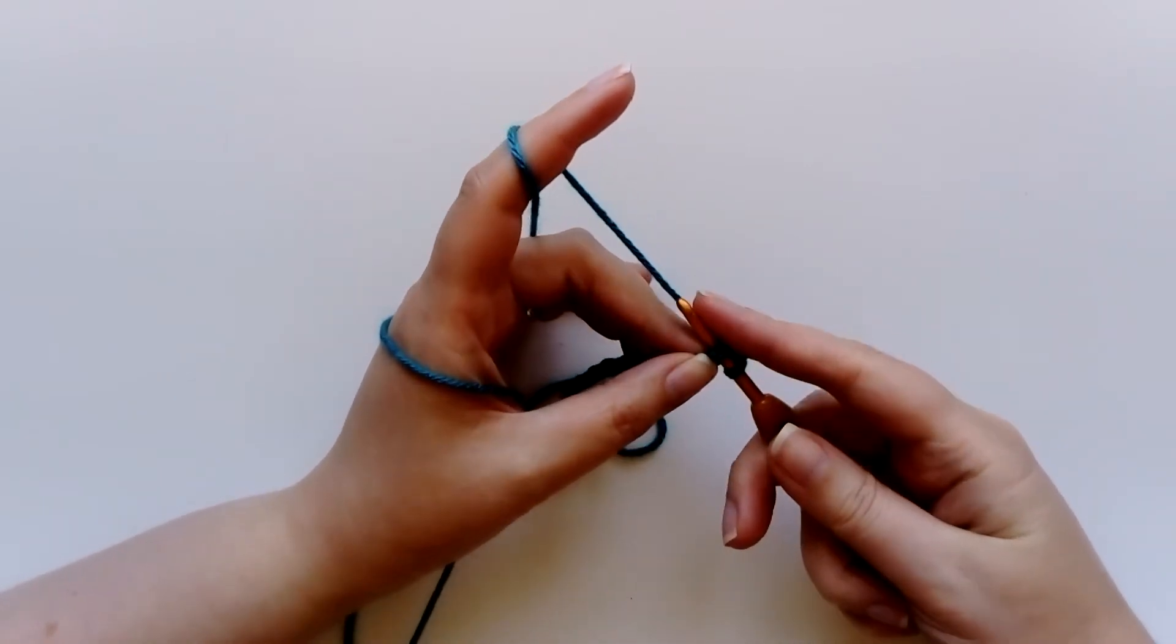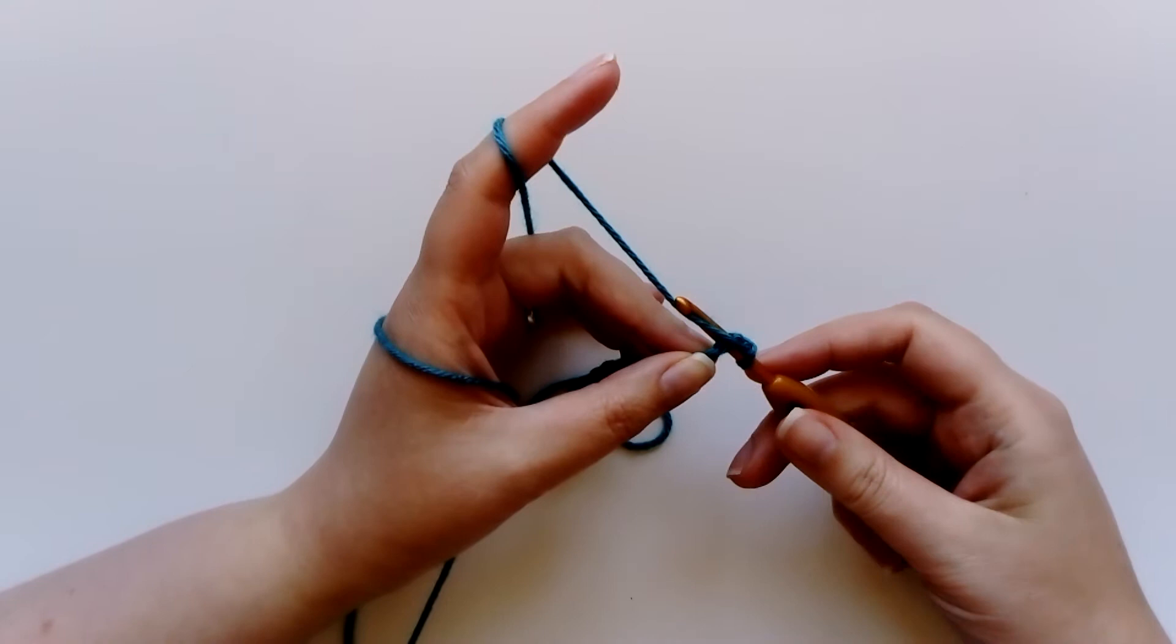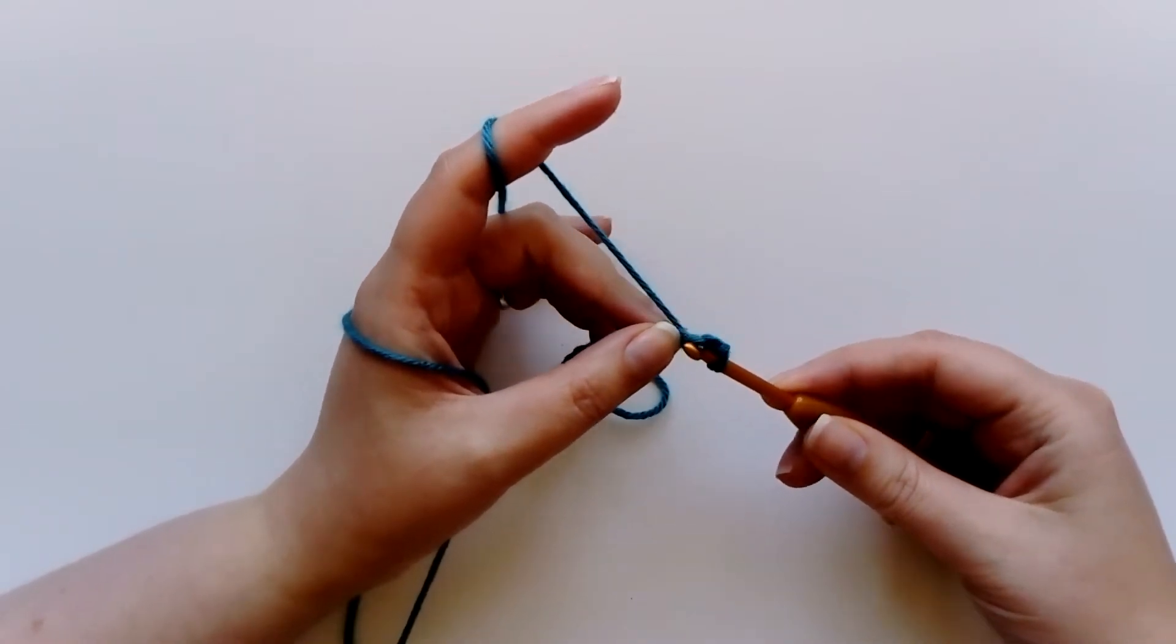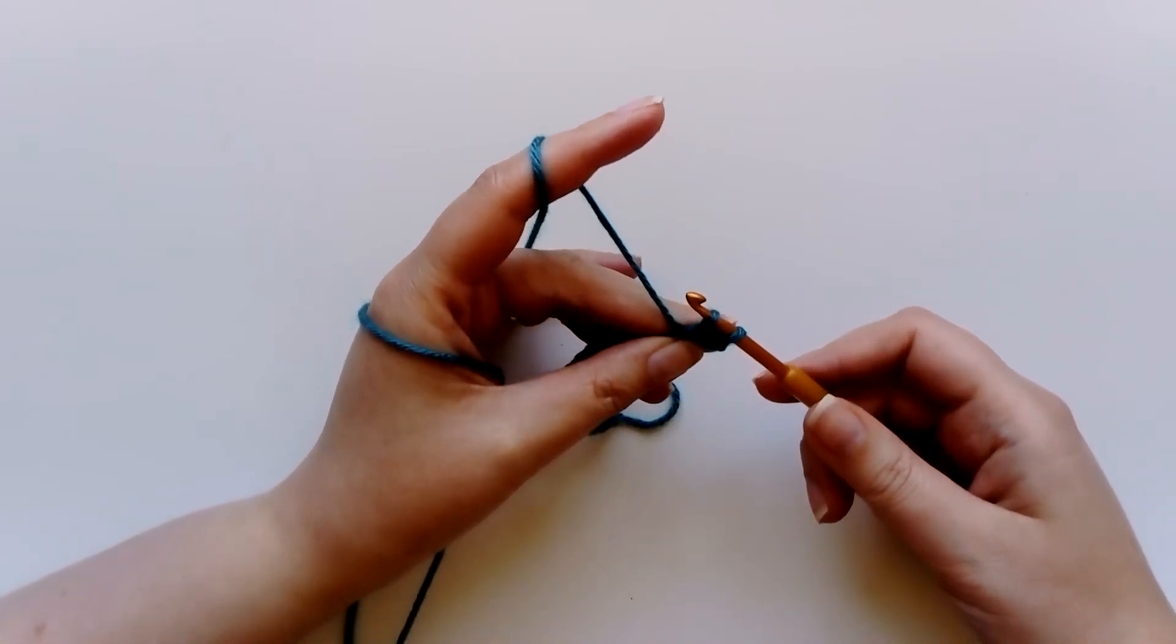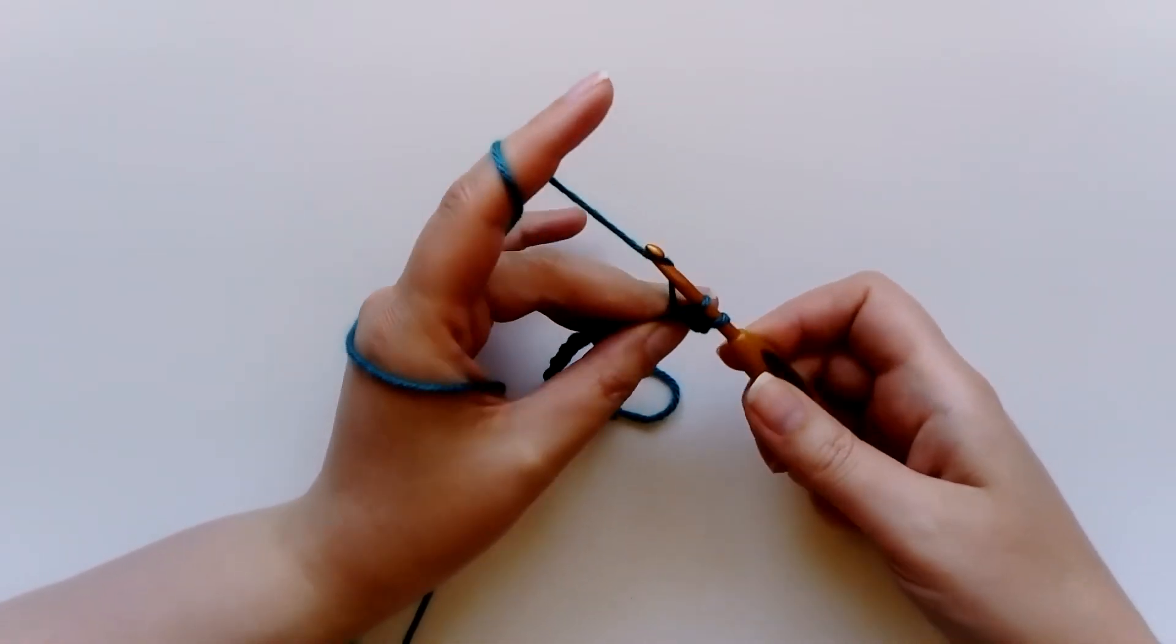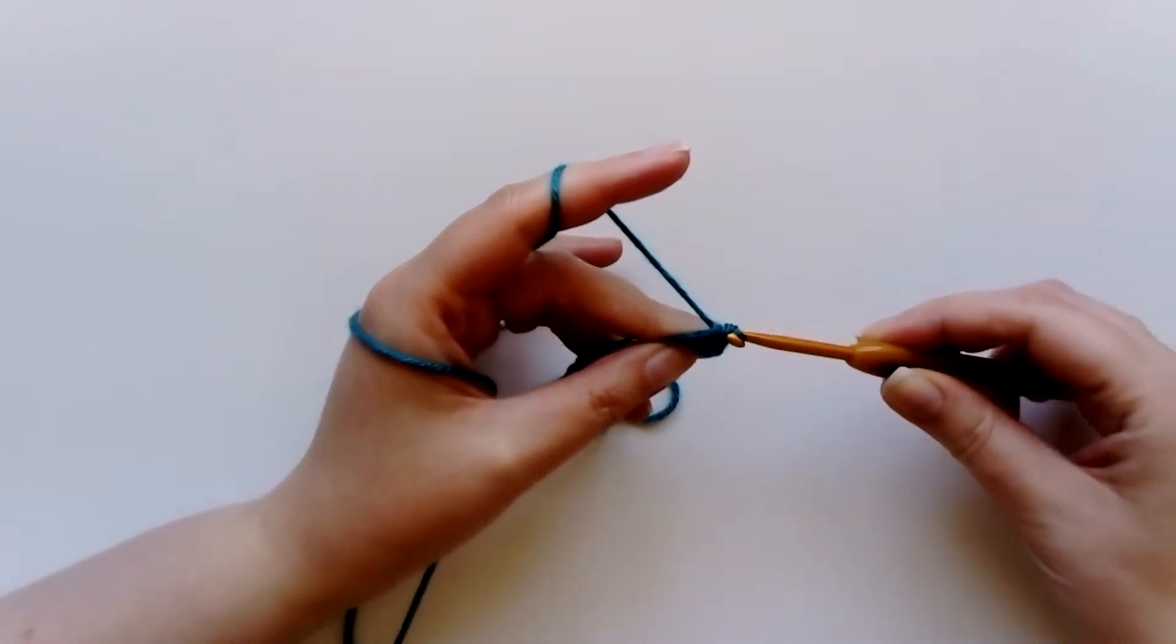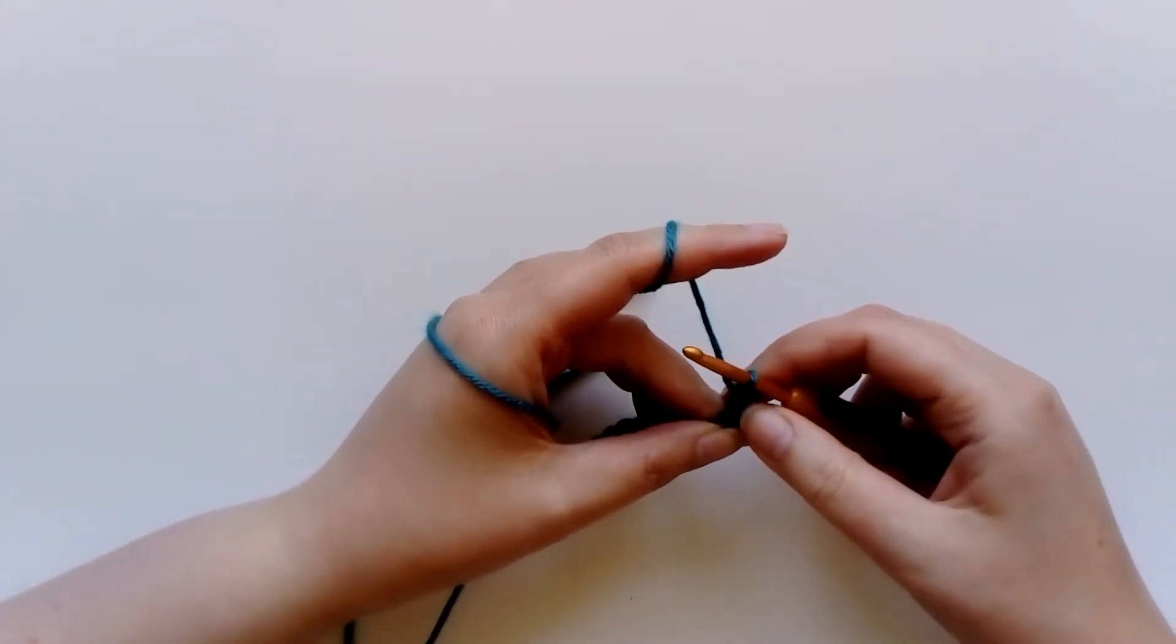So I've inserted my hook, then I'm going to wrap my yarn over my hook, pull it through that chain stitch like so, so that I've got two loops on my hook. Then wrap the yarn over again and pull it through both of those loops, and that's one double crochet stitch.